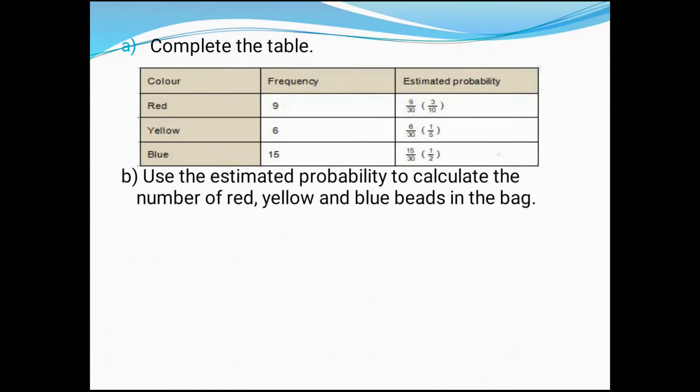Next one, part B. They're asking: use the estimated probability from the last column we worked out to calculate the number of red, yellow, and blue beads in the bag - the actual theoretical number we have to work out. Red beads: to find out the red beads, we have to remember the estimated probability is three by ten, and total number of beads was ten. So three by ten multiplied by ten - if I cut ten by ten, which gives three. So we have three red beads. Let's go to the next one: yellow beads. Yellow, what is the fraction? One by five. One by five multiplied by ten. If I use five times table: five ones are five, five twos are ten, so we get two.